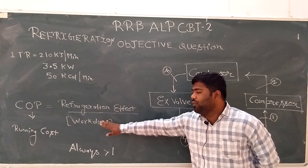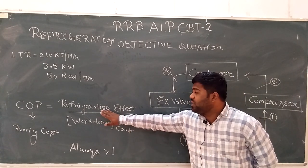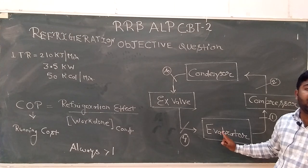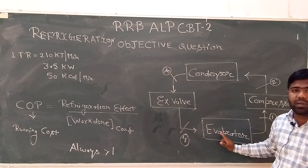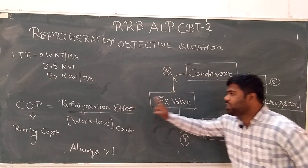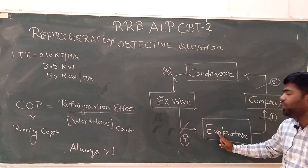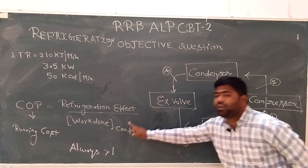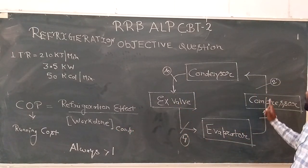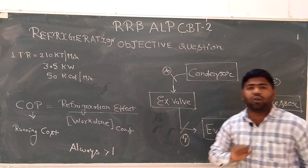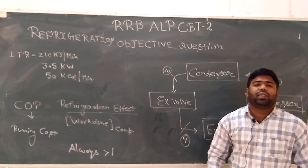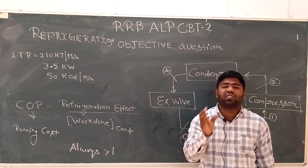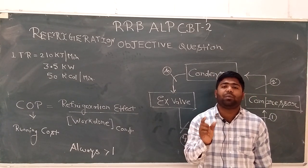COP equals Refrigeration Effect divided by Work Done. The refrigeration effect is always given by the evaporator — the evaporator gives the refrigeration effect. And the work done is that of the compressor — it is the compressor's work done.